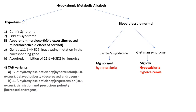Apparent mineralocorticoid excess has two main causes — genetic or acquired. Genetic is due to an inactivating mutation of the 11-beta HSD2 gene, while acquired is because of licorice inhibition of 11-beta HSD2. For the CAH variants associated with hypertension, there are two deficiencies: 17-alpha hydroxylase deficiency and 11-beta hydroxylase deficiency. The primary reason for hypertension in these cases is deoxycorticosterone (DOC) excess — very important to remember.